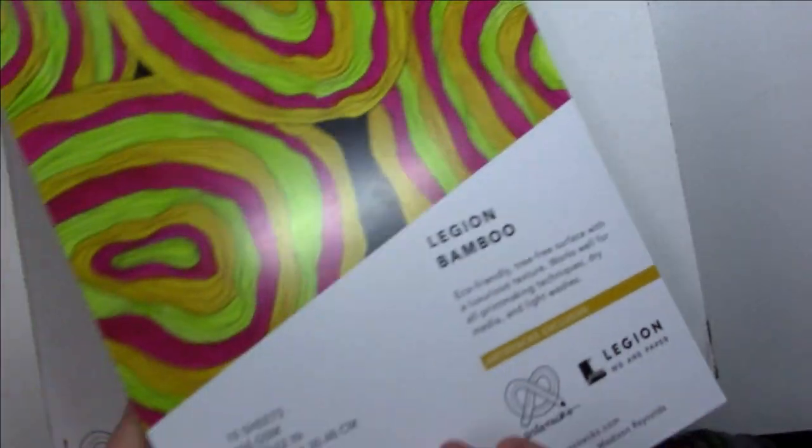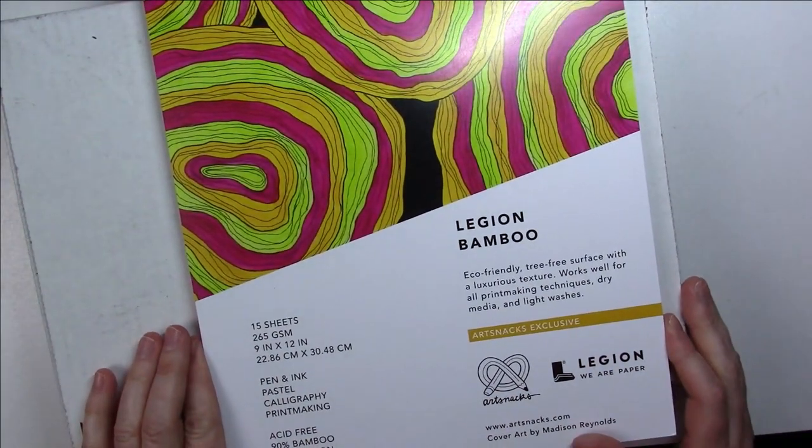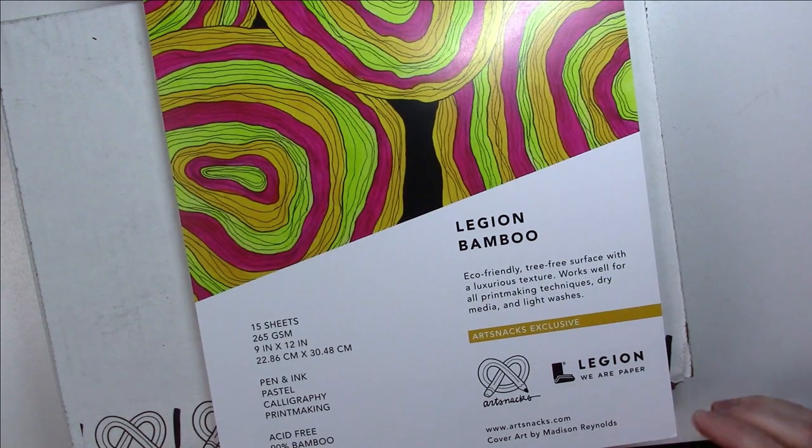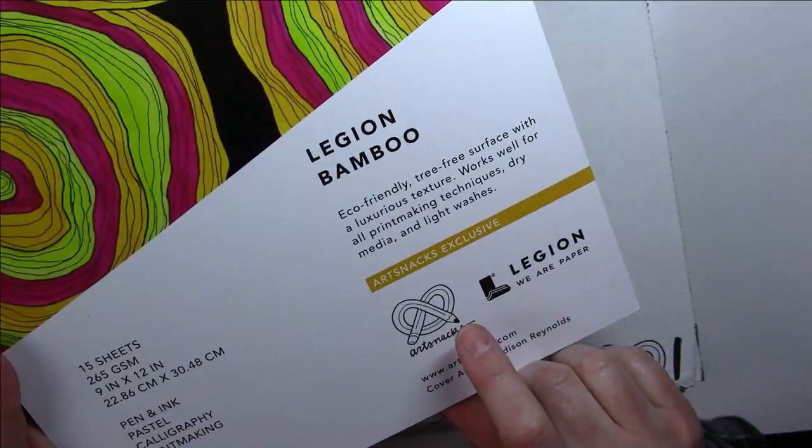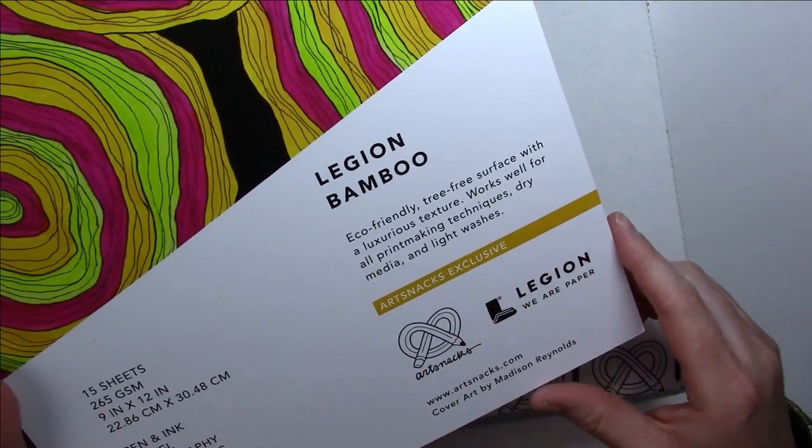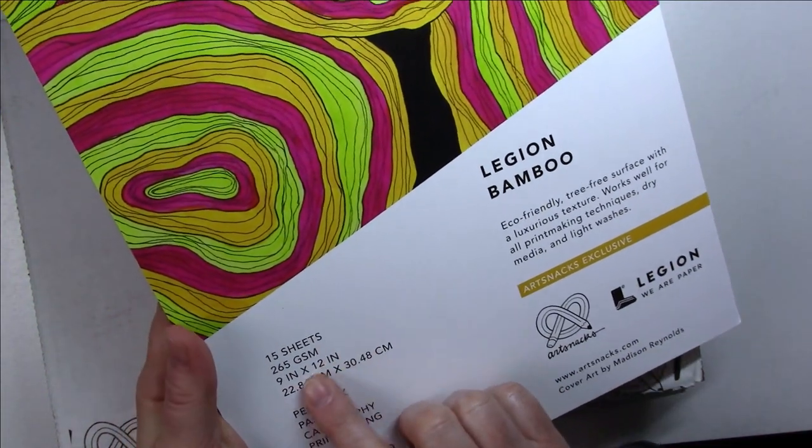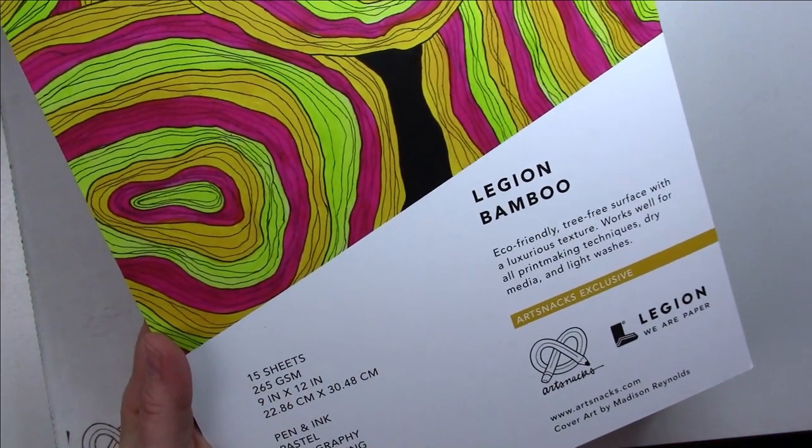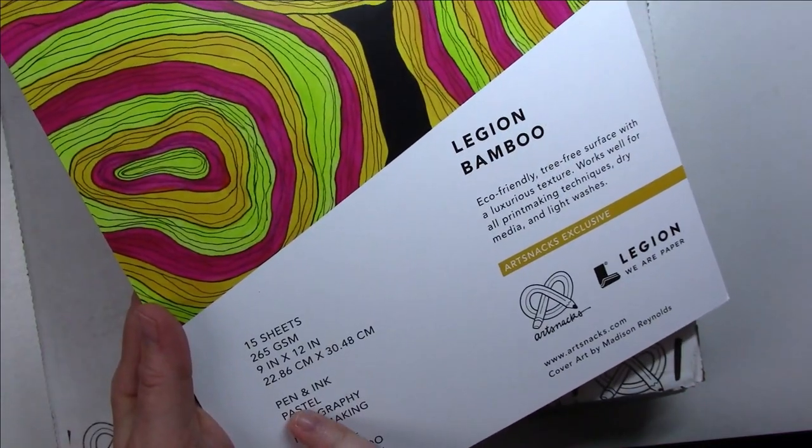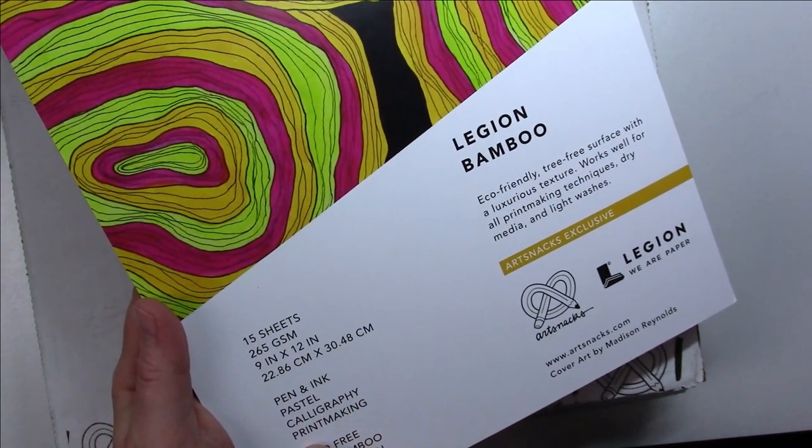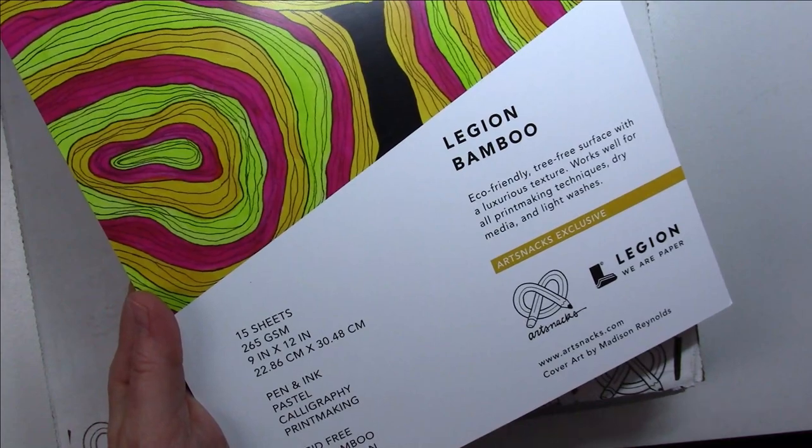The surface that came in the box is by Legion - it's a Legion Bamboo, an Art Snacks exclusive. It has 15 sheets, 265 gsm so it's pretty thick. It's good for pen and ink, pastel, calligraphy, printmaking, acid-free.